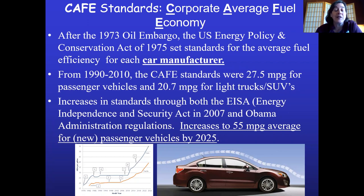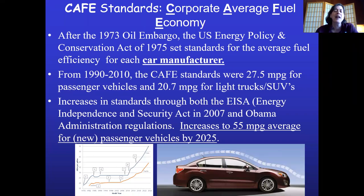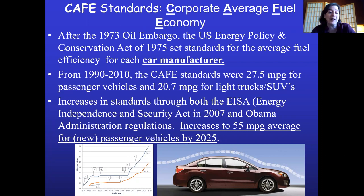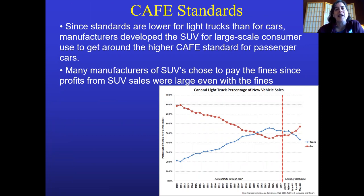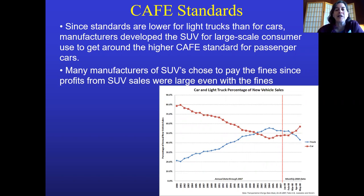Obama raised the standard to 55 miles per gallon for new passenger vehicles by 2025. The Trump administration removed that target, but states like California said they would keep going with those standards, and many car manufacturers agreed. The federal government was looking at suing California, arguing states can't set their own standards — but California has set its own standards for a long time and is fighting back. The lawsuit remains ongoing.